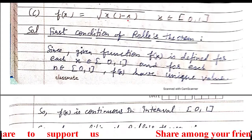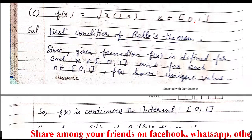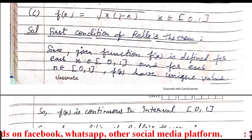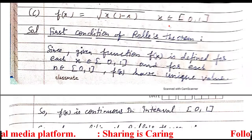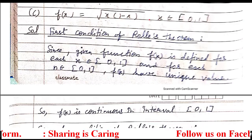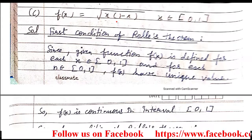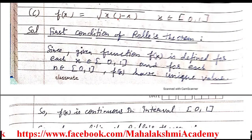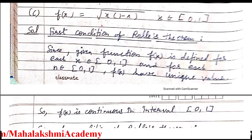If you substitute values from 0 to 1, the function is well defined. For every value of x in the closed interval 0 to 1 you get a unique value. So there are two sub-conditions: first, for every x in [0,1] the function should be defined; second, at every such x the function should have a unique answer.